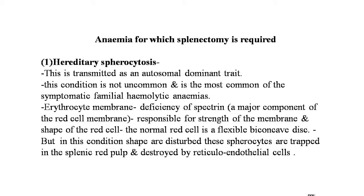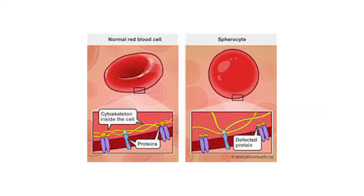The first condition is hereditary spherocytosis, transmitted as an autosomal dominant trait. It is the most common symptomatic familial hemolytic anemia. There is a membrane deficiency of spectrin — a major component of the red cell membrane responsible for membrane strength and red cell shape. The normal red cell is a flexible biconcave disc, but in this condition the shape is disturbed. These spherocytes are trapped in the splenic red pulp and destroyed by reticuloendothelial cells.